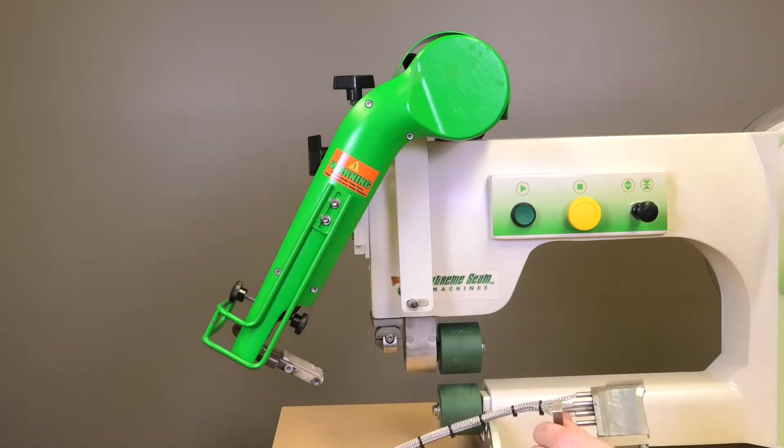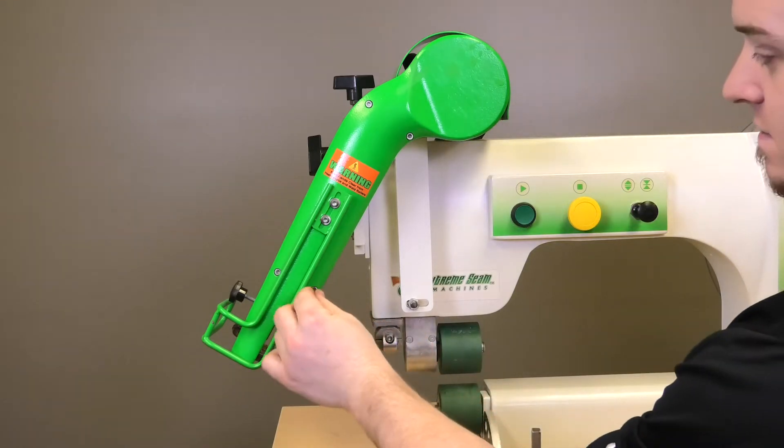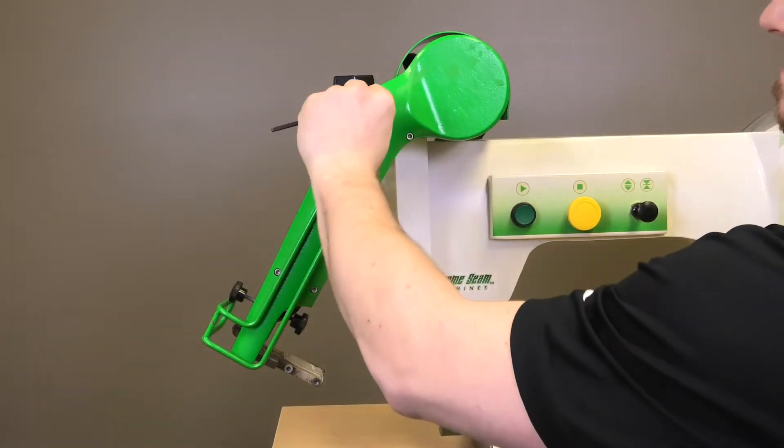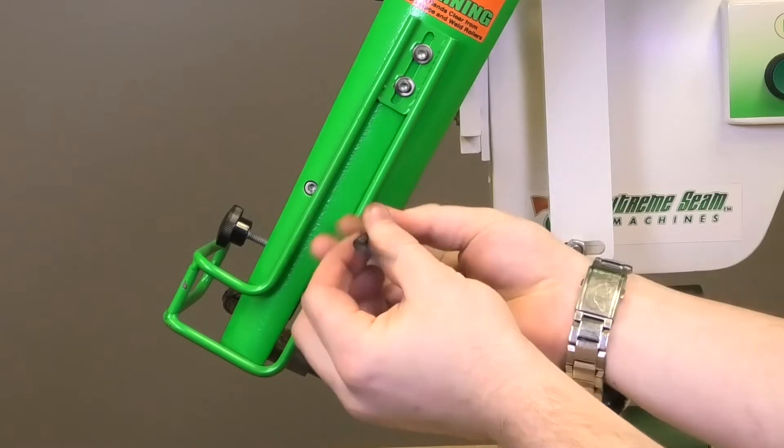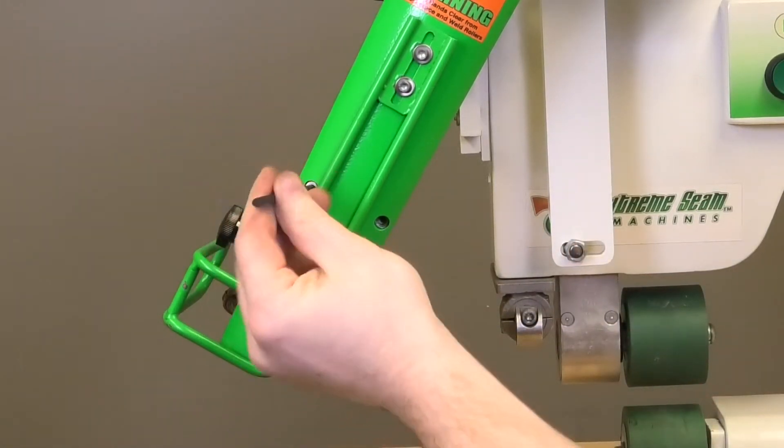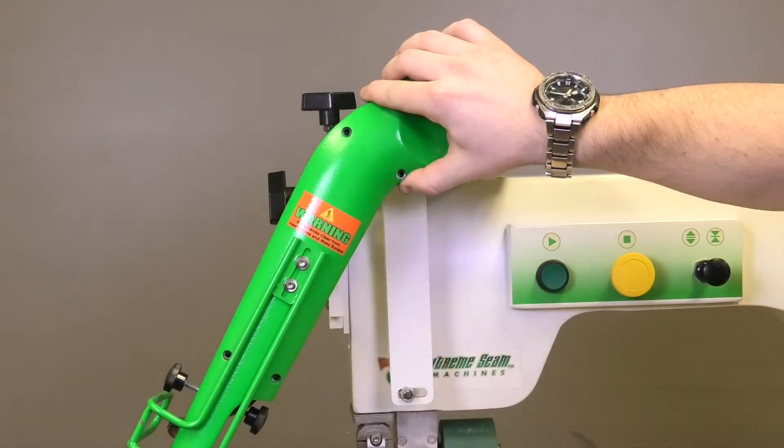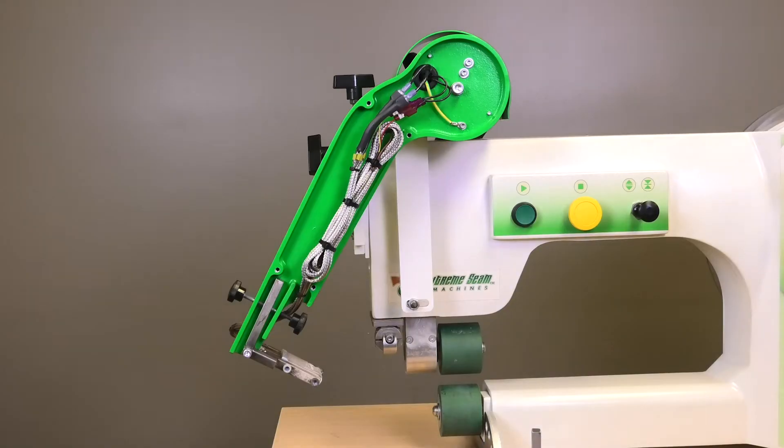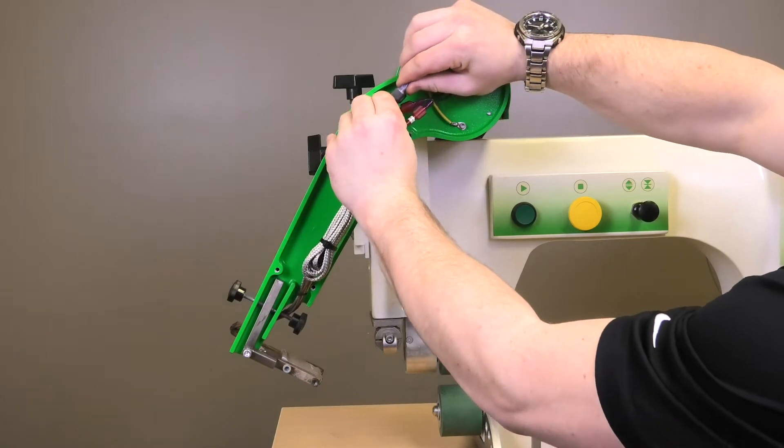First let's remove these four bolts for the cover plate. Once removing the cover and confirming that your power is off to the machine, you can pull apart the two power leads.